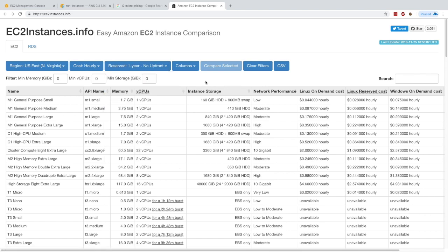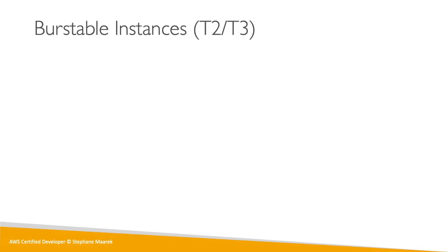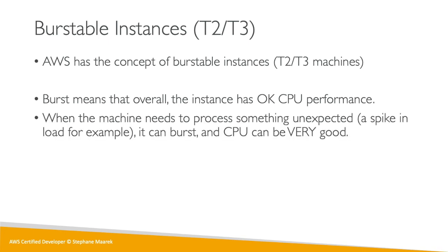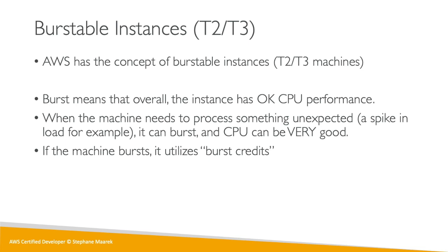The burstable instances are T2 and T3. When the instance is running, you get okay CPU performance and it's doing fine. But sometimes you need to process something very unexpected — maybe there's a spike of load in your application and your CPU skyrockets to 100%. During these spikes, the CPU can do something called a burst, which is like a boost of power, and the CPU is very good during that burst. But if your machine bursts, it uses burst credits.